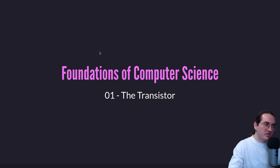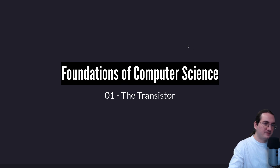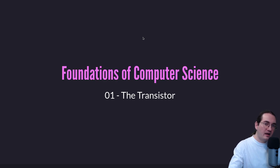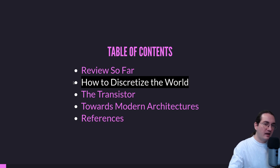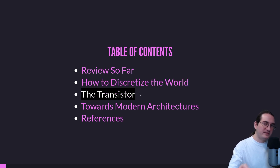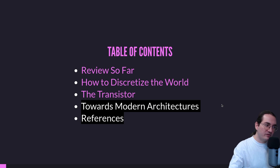Hi everyone, welcome to this new video in which I continue my Foundation of Computer Science series. In this video we will try to understand how digital bits are created, and we will talk about the transistor, which is the technology that allows us to have digital bits. The table of contents: we will start with a review, then discuss how to discretize the world, then talk about the transistor, and finally how the transistor is used in modern architecture.